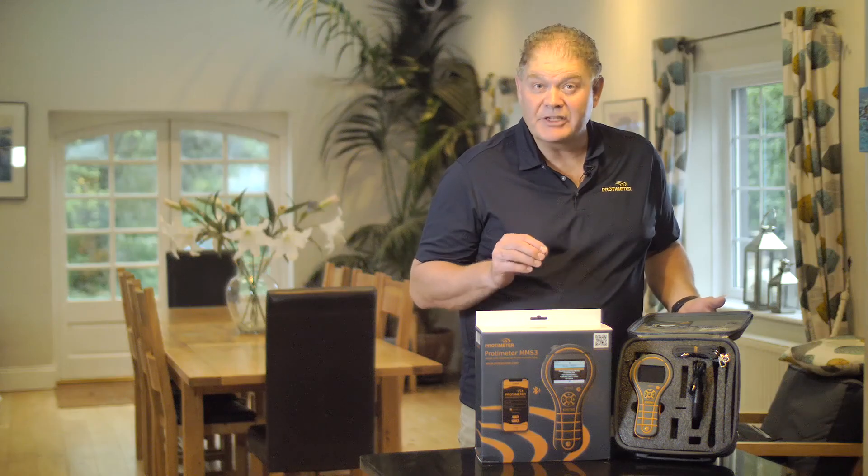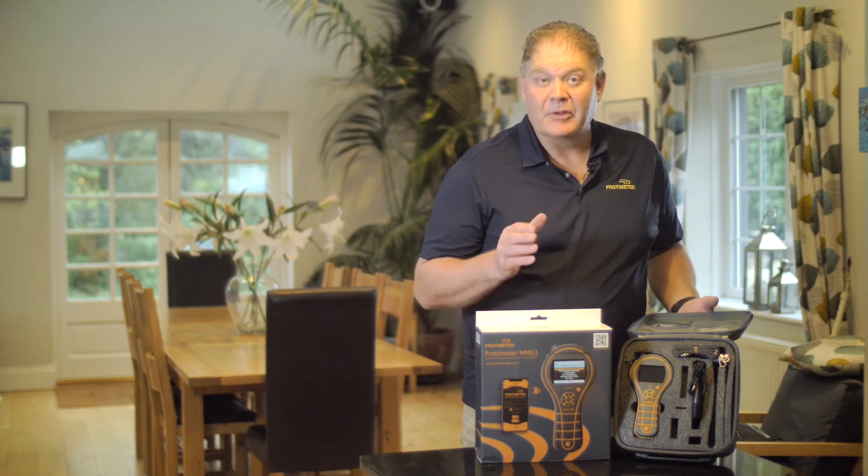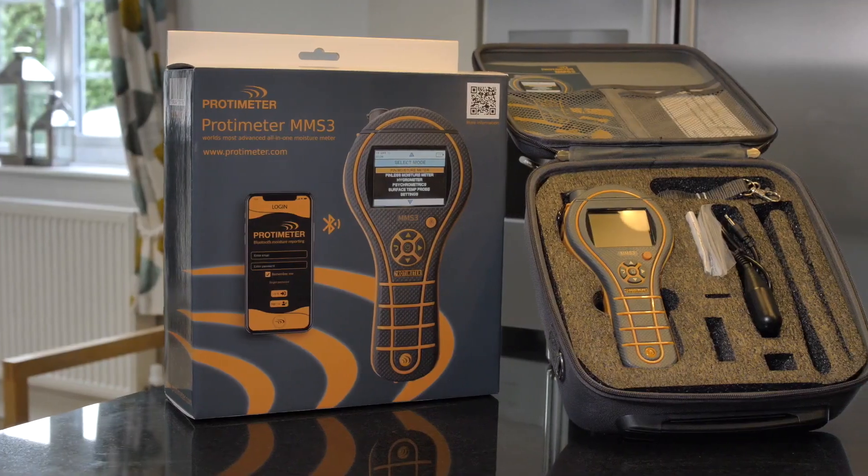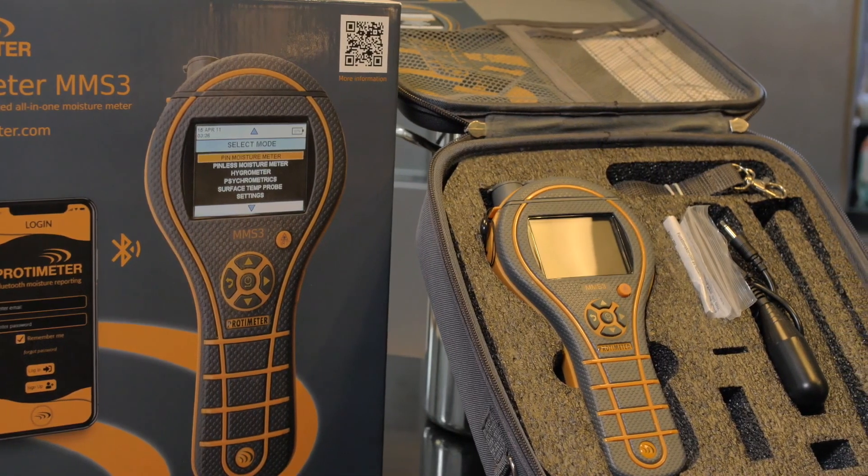The MMS3 comes in a variety of packages. All these packages can be seen on our website and include this thermoform case, as well as hard carry cases that have accessories such as hammer electrodes and deep wall probes. You can find all these details on our website at protometer.com. Thank you for watching our short video.